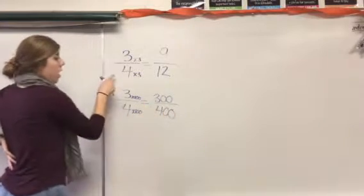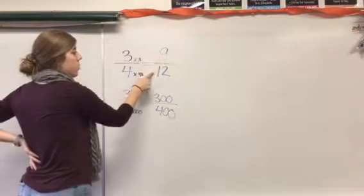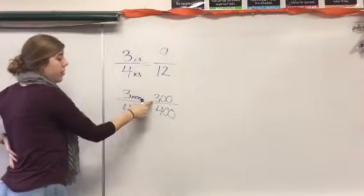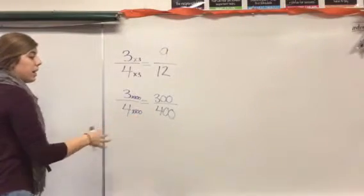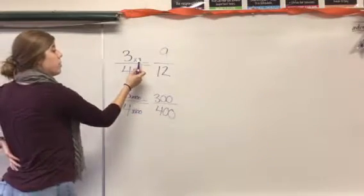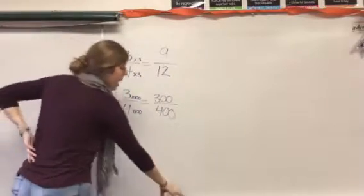So 3/4 is equivalent to 9/12. It's also equivalent to 300/400. And there's many other things you could create that are equivalent. As long as whatever you multiply to the top, you also do at the bottom.